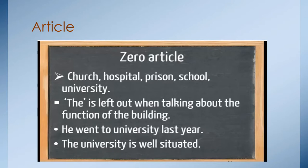Another exception. If you are talking about church, hospital, prison, school, university in general or if you are talking about, for example, love or prison in general, or music in general, you don't have to use the article THE, A or AN. THE is left out when talking about the function of the building. He went to university last year. We are talking about the function of the university. The university is well situated. This one is different because we are talking about a specific university.